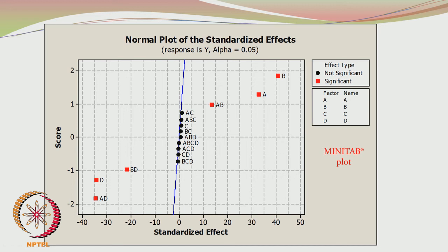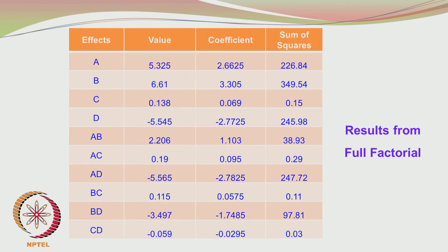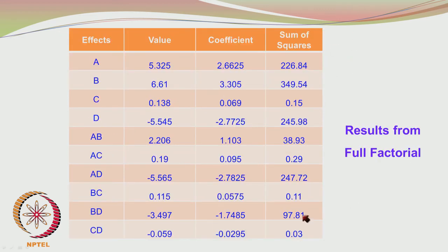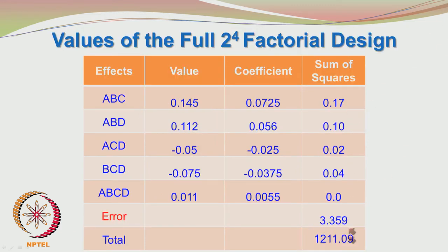In the full design you can see that so many effects are insignificant — only about 6 of the total number are actually significant. This itself gives us a clue that performing the fractional factorial design was a wise idea. The results from the full factorial are presented here — the effects value, the coefficient obtained by dividing the value by 2, and the sum of squares are included. The sum of square values are now higher because you are combining the 2 fractions to get the full design.